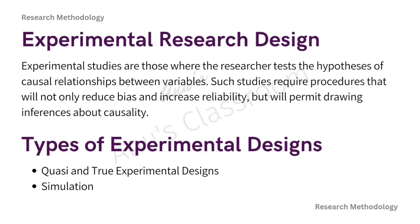The third type is experimental research design. Experimental studies are those where the researcher tests the hypothesis of causal relationships between variables — like the relationship between fuel prices and the sale of refrigerators. Such studies require procedures that reduce bias, increase reliability, and permit drawing inferences about causality. The researcher tries to determine if manipulation of one variable — the independent variable, like fuel prices — will affect the other variable, the dependent variable, like the sale of refrigerators.